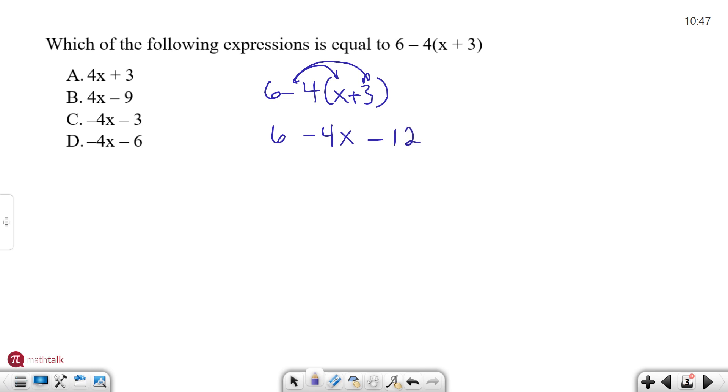Now 4x is the only term with an x in it so we're going to leave it by itself keeping the sign in front. And we have basically 6 - 12. Well 6 - 12 is going to be -6 so we need the expression which is -4x - 6 which happens to be right here. So just apply rules of distributive property and operations to simplify what you're given and choose the best answer.